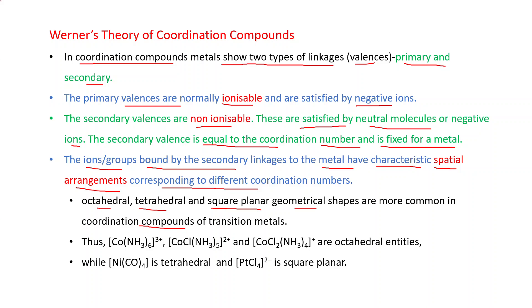Octahedral, tetrahedral, and square planar geometrical shapes are most common in coordination compounds of transition metals. If the coordination number is 6 — for example [Co(NH3)6]3+, [CoCl(NH3)5]2+, and [CoCl2(NH3)4]+ — these are octahedral entities. If coordination number is 4, then [Ni(CO)4] is tetrahedral, and [PtCl4]2- is square planar.